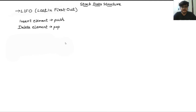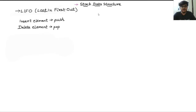Welcome to the data structures in Python playlist. In this playlist, we are going to study different types of data structures. Data structures are used to give some form to data, and by giving properties to the data, we can form structures out of them. Using these structures, we can perform a lot of operations, which will help us in many applications. So let's start with the stack data structure.